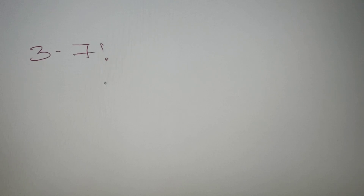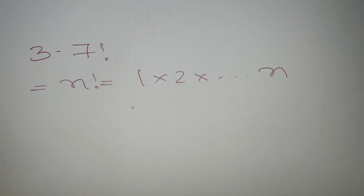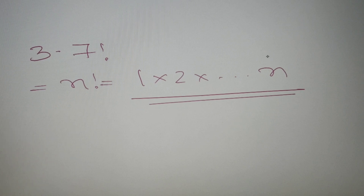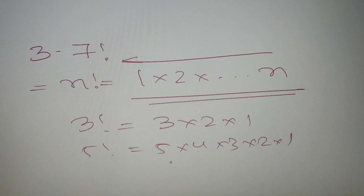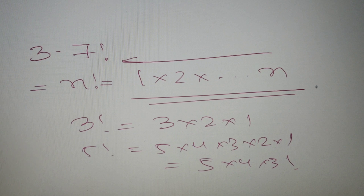Moving on to our third question, we have to find all the odd factors for 7 factorial. If you don't know what factorial means: the factorial of n is the product of all numbers from 1 up to n. For example, 3! = 3 × 2 × 1, and 5! = 5 × 4 × 3 × 2 × 1, which can also be written as 5 × 4 × 3!. If you want to know more about factorial, there is a separate video on this channel you can watch first.